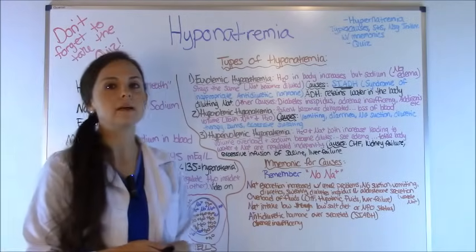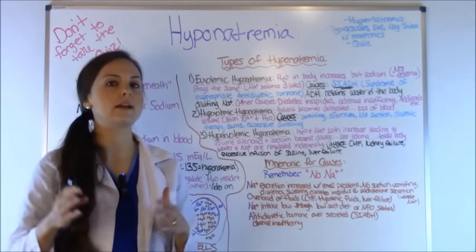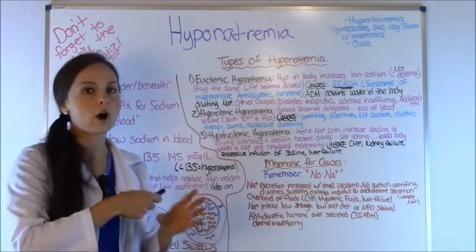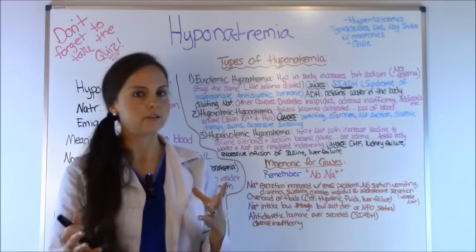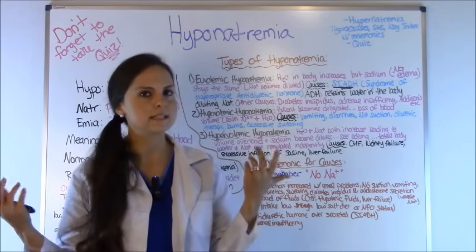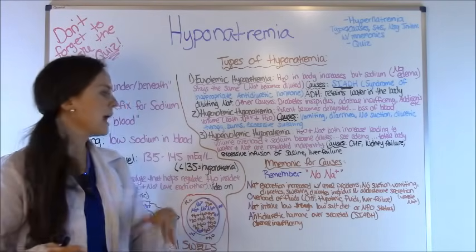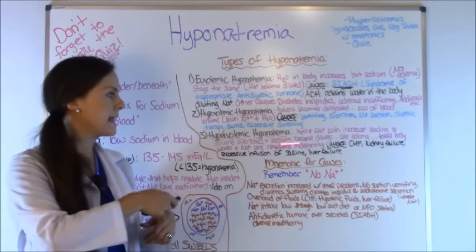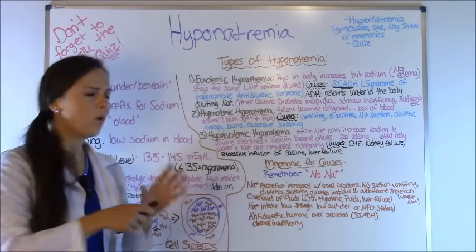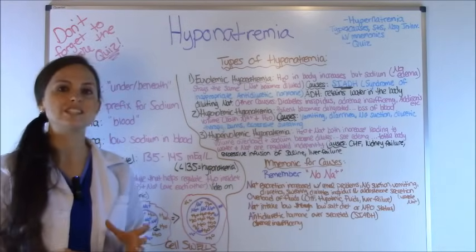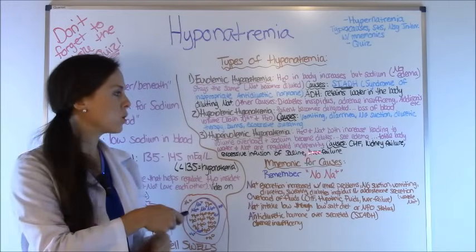The third type is hypervolemic hyponatremia. This is where both water and sodium increase in the body, leading to fluid volume overload — you're really going to see swelling on these patients. However, the sodium becomes diluted. Even though both are increasing, total body water and sodium are regulated independently of each other, so it actually causes sodium to decrease. You're going to see this in patients who have CHF (congestive heart failure), kidney failure, excessive infusion of saline solution, or liver failure.